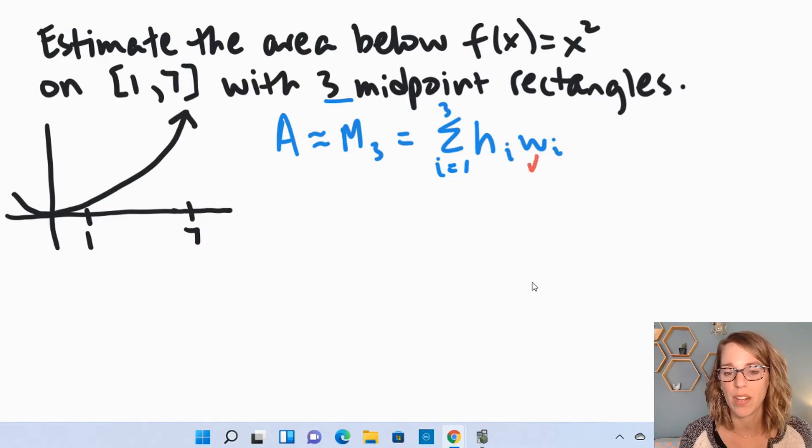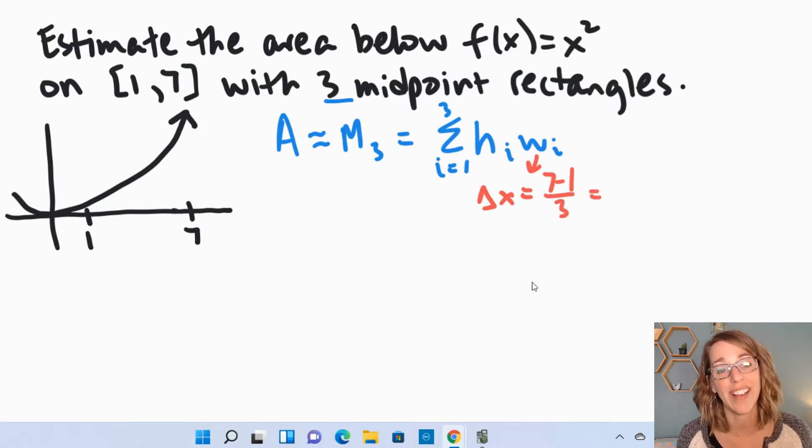Let's go ahead and start by figuring out that width. We're going to take delta x, and we compute that by doing the interval length, so 7 minus 1, divided by the number of rectangles. That's going to be 6 divided by 3, or 2.